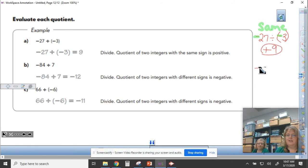Examples like a negative 84 divided by a positive 7: I'm thinking are my signs the same or different? This time they're different. It's going to be a negative answer. Then I have 84 divided by 7 which is 12, so I end up with a negative 12.